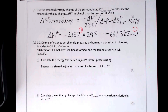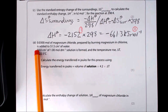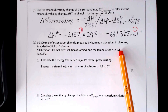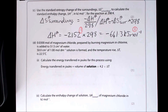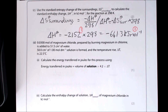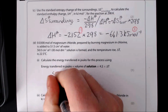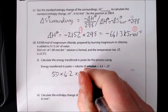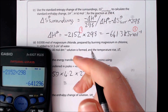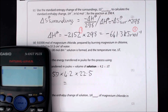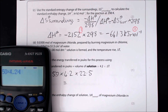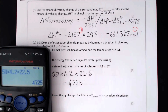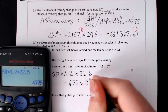Part D1: 0.0300 moles of MgCl₂ is added to 51.5 cm³ of water making 50 cm³ of solution; temperature rise is 22.5°C. Calculate the energy transferred using q = mcΔT. Energy = 50 × 4.2 × 22.5 = 4725 J.